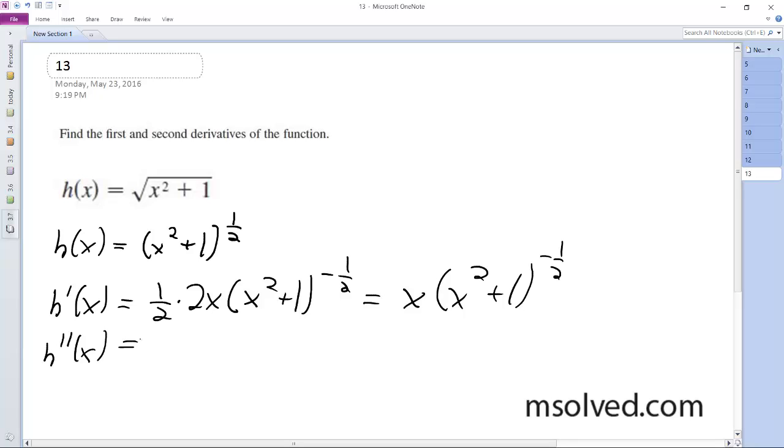We're going to use the product rule and the chain rule, so the first product rule is just going to be x squared because the derivative of x is just 1 raised to the negative 1 half plus x times quantity negative 1 half times 2x, and x squared plus 1 raised to the negative 3 halves.